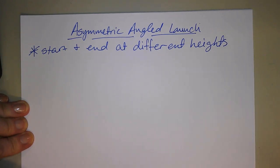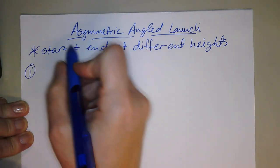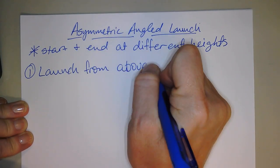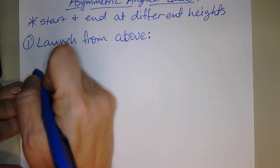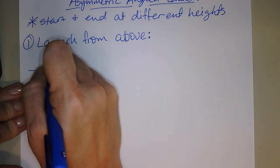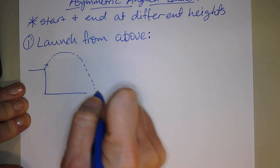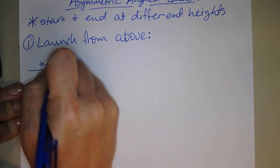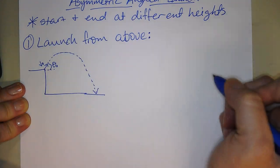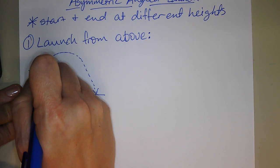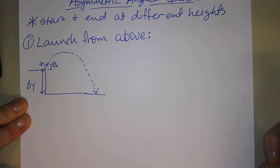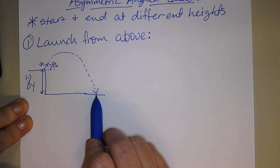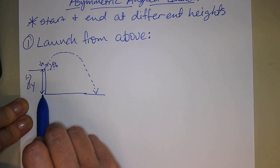So we have two different types of things we're looking at. We're going to do launch from above — maybe when you have a cliff, and something is launched off the cliff at an angle, goes up and falls down and hits something. You would have a V initial, and you take your angle with respect to the horizontal axis — that's your theta initial. The height of the cliff is technically your delta Y, your vertical displacement, and it's a negative number because you are higher at the beginning than at the end.